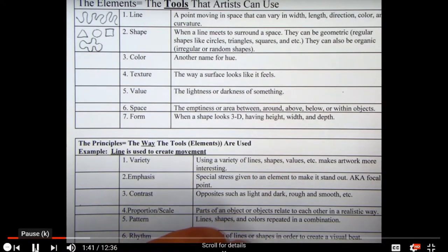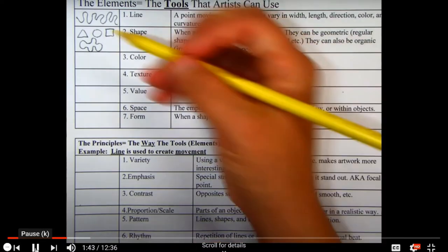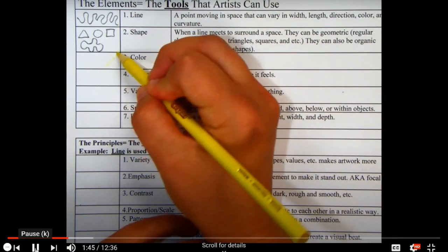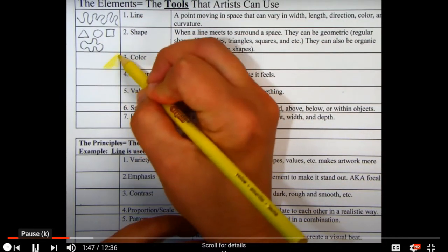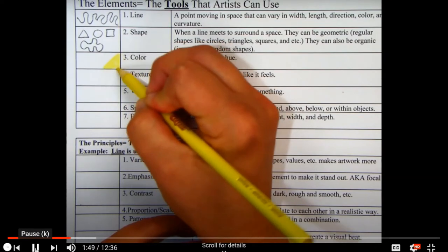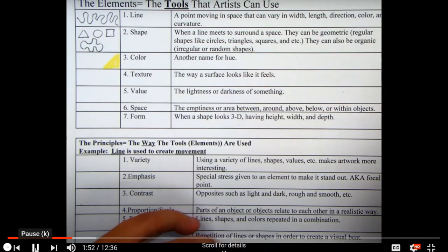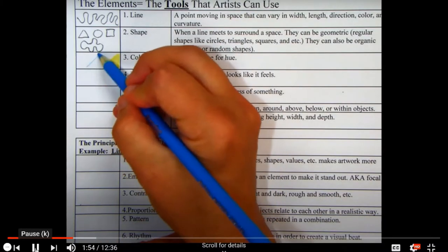For color, you may have colored pencils, you may not. If you have them, you can color this in. Your primary colors are going to be red, yellow, and blue. Para colores, pueden usar colores y si no, déjenlo en blanco. Los colores primarios son rojo, azul, y amarillo. So you can color your primaries in there.